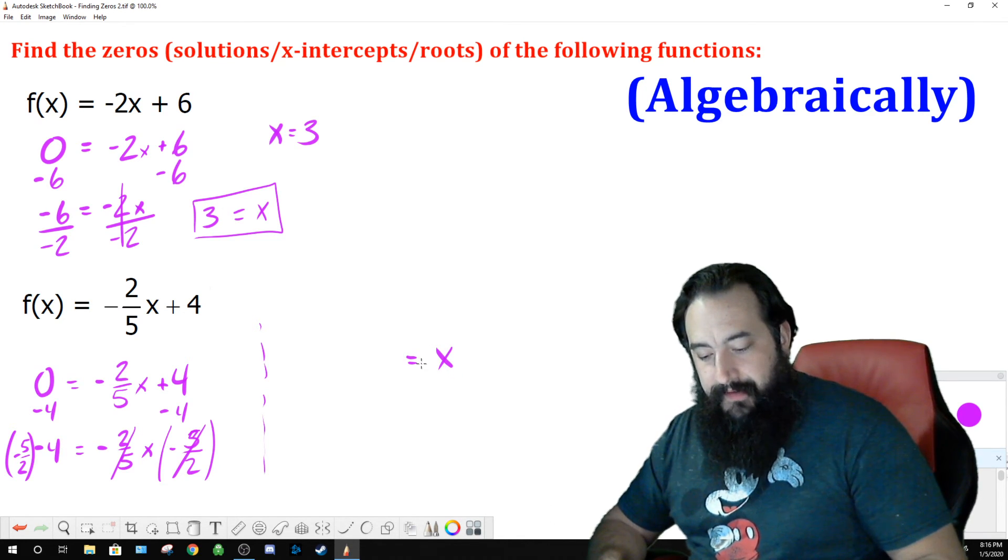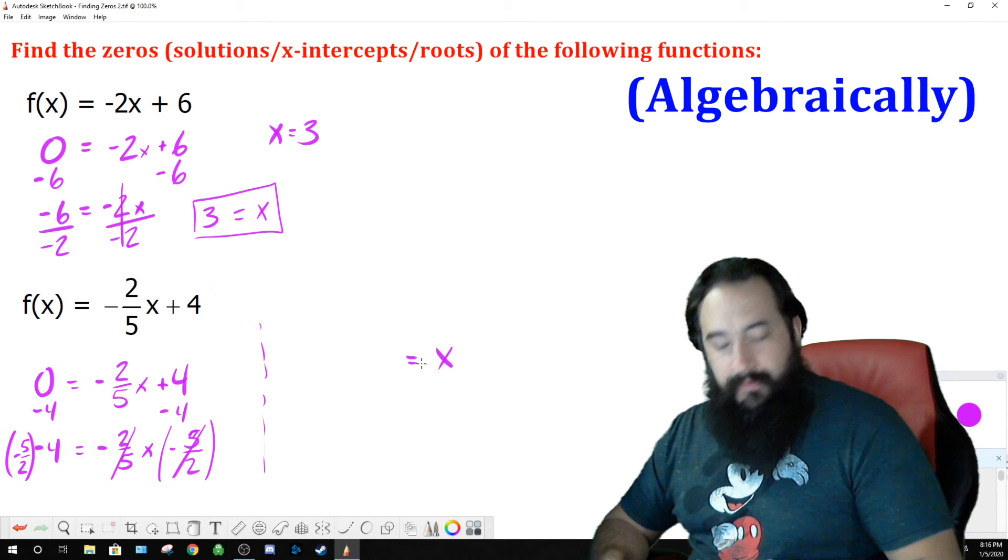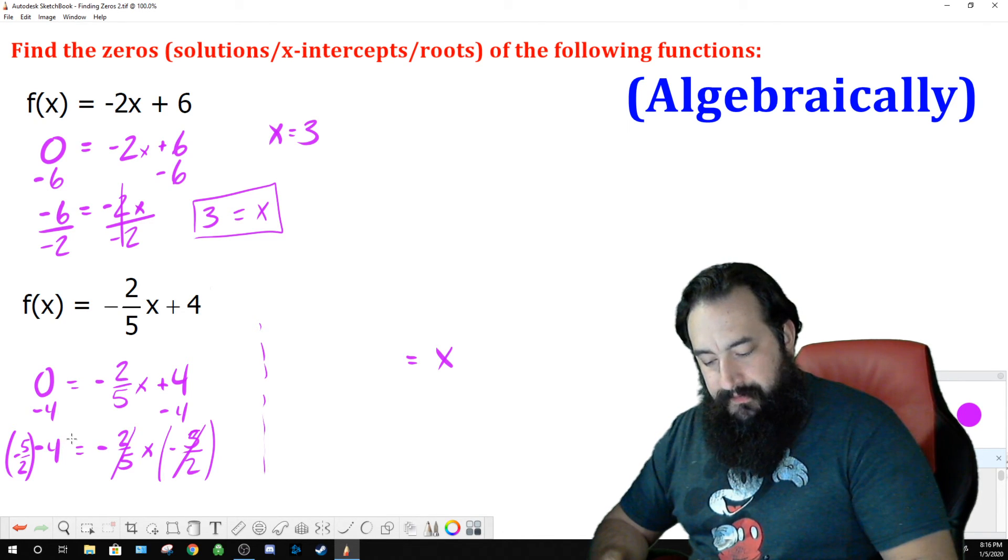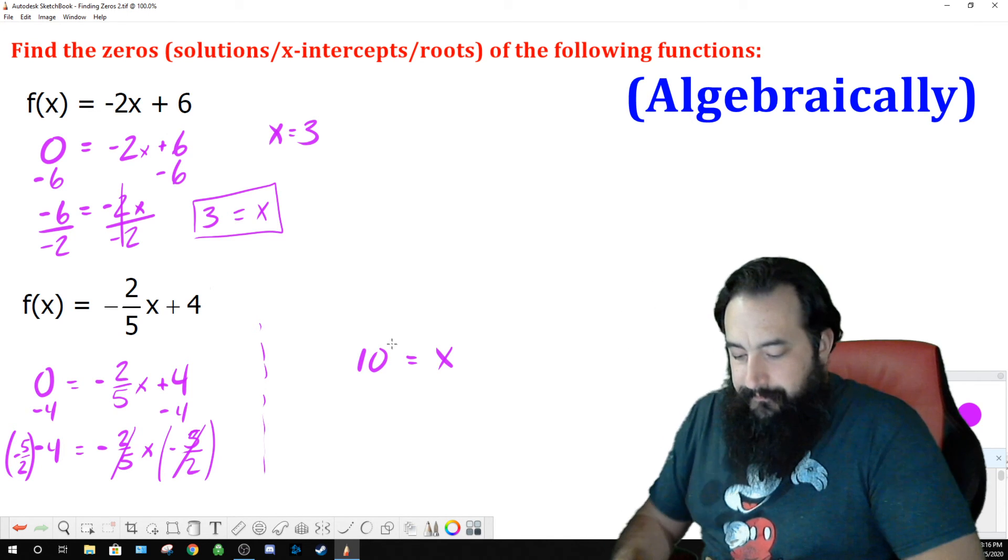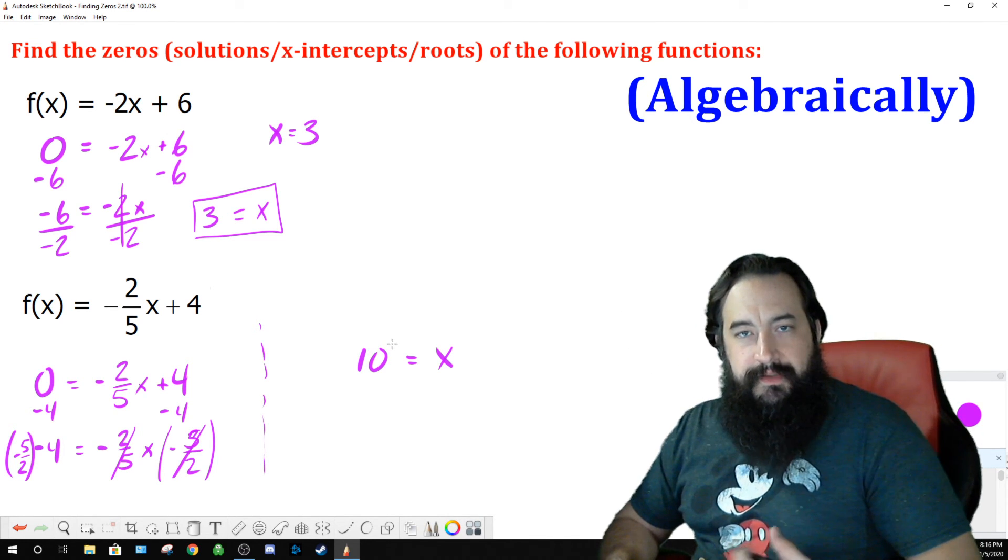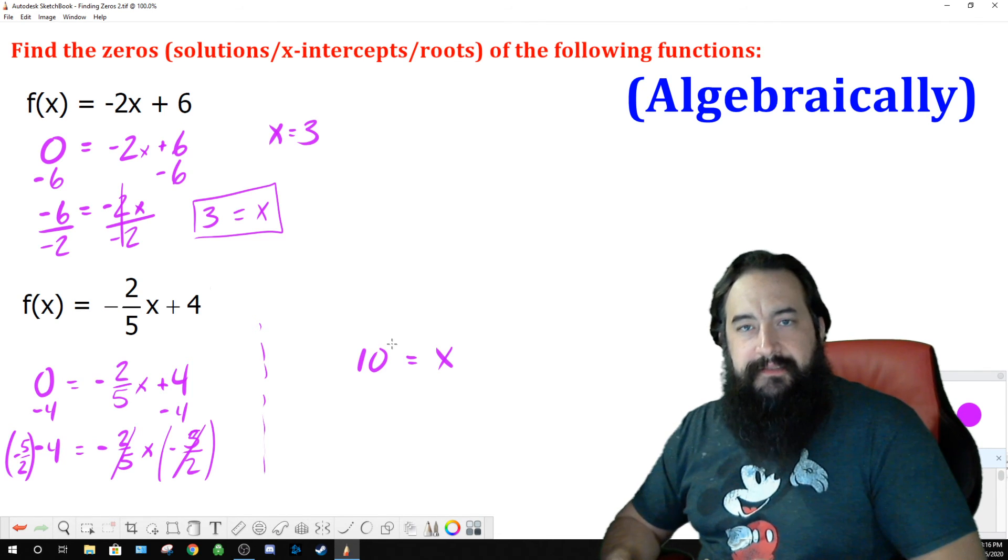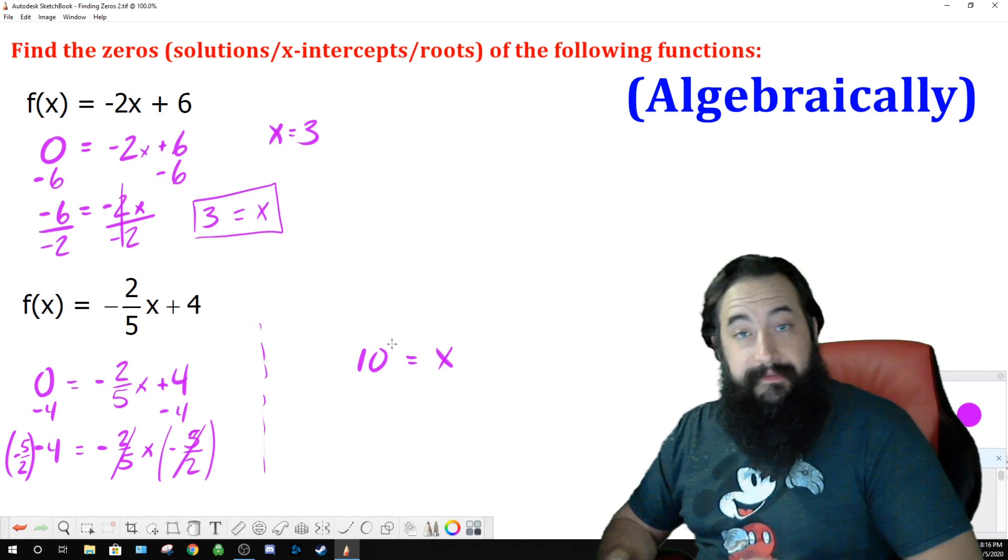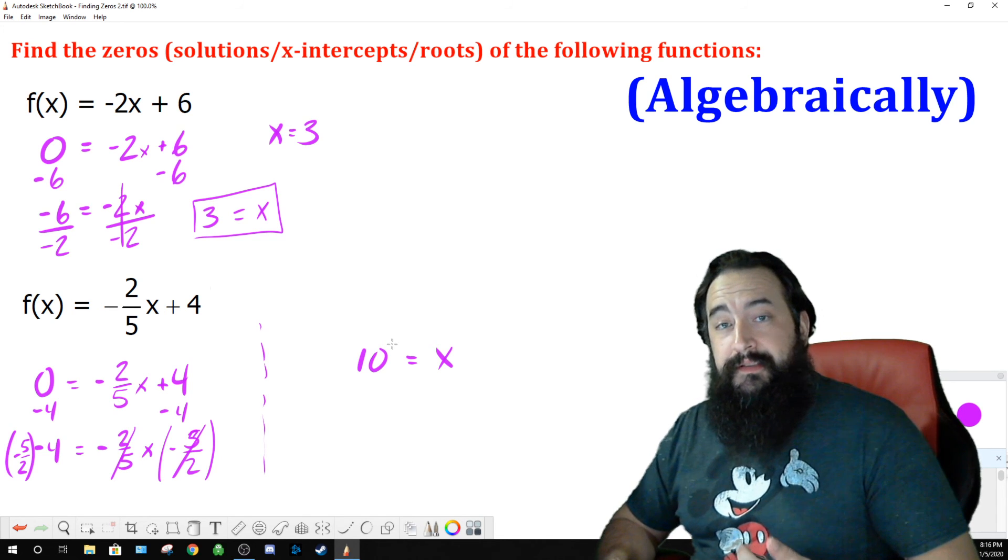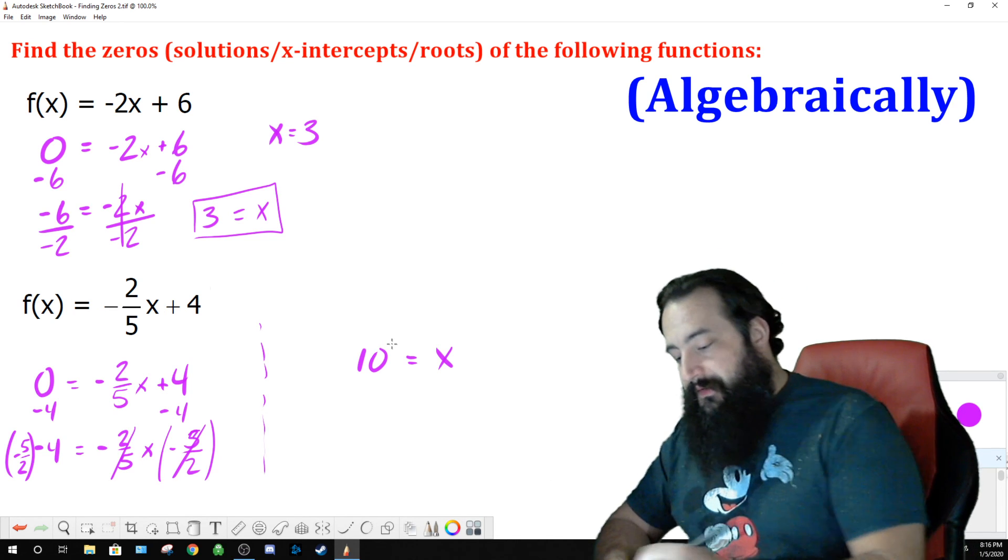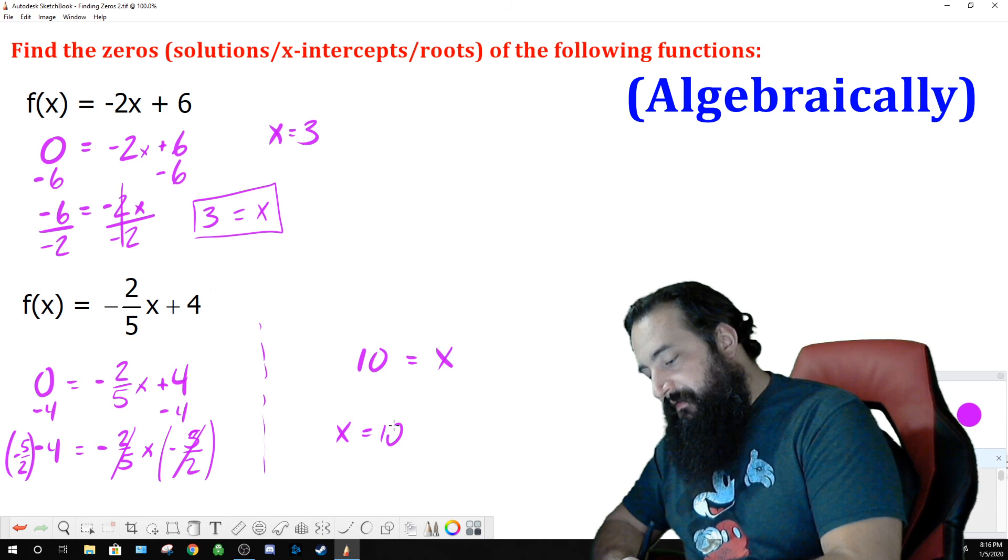On the left, negative 5 halves times 4. Let me work this out really quickly. This is 5 times 2, which is 10. 5 times 4 is 20. 20 over 2 is 10. The negatives cancel each other out. Just want to make sure I got the right answer there. So, x is equal to 10 when f(x) is equal to 0. So, the zero for this function is located at x is equal to 10.